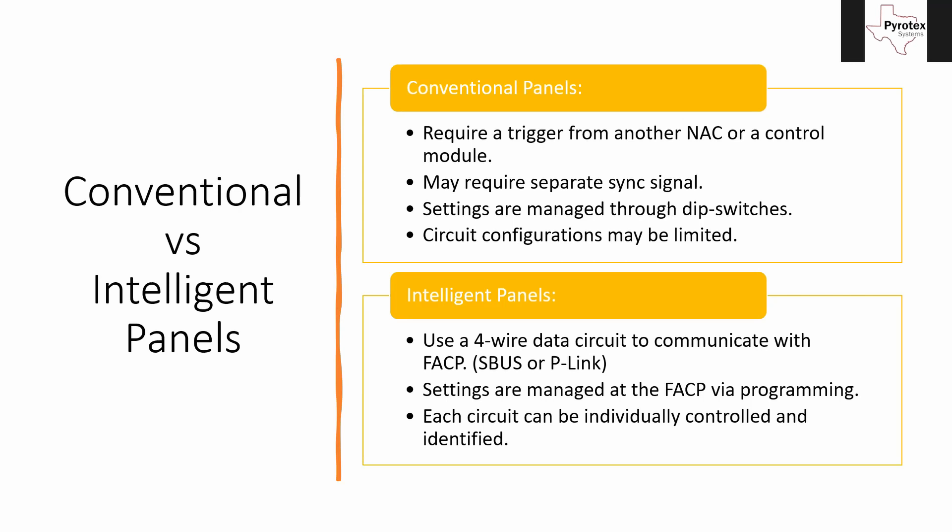The other type of panels we have are intelligent panels. Most of our schools or anything with a Silent Night or Fahrenheit panel gets these intelligent ones. They use a four-wire data circuit to communicate with the control panel, so they don't have a separate sync signal. Any signal communicating between the two is going to be over that four-wire circuit. In the case of Silent Night or Fahrenheit, that's called SBUS.